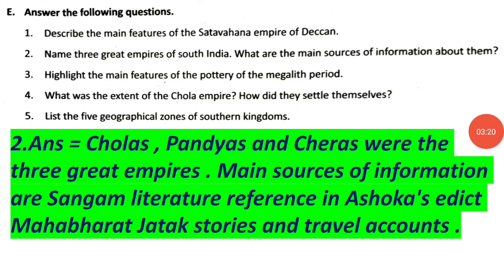Question 2: Name three great empires of South India. What are the main sources of information about them? Answer: The Cholas, Pandyas, and Cheras were the three great empires. The main sources of information are Sangam literature, references in Ashoka's edicts, the Mahabharata, Jataka stories, and travel accounts.